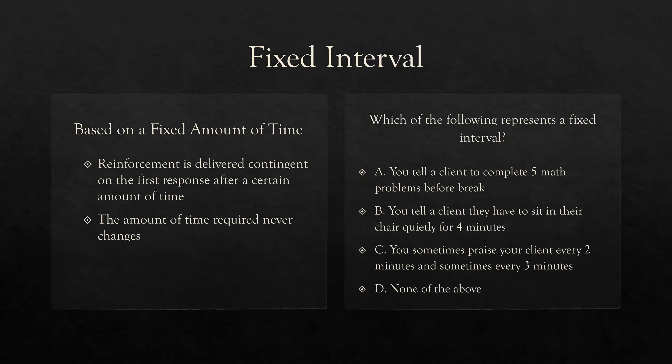Which of the following represents a fixed interval? A: tell a client to complete five math problems before break — yes it's fixed, but it's based on responses, not time, so eliminate it. B: tell a client they have to sit in their chair quietly for four minutes — based on time, and it's fixed at four minutes, so we reinforce them after four minutes pass. C: you sometimes praise your client every two minutes and sometimes every three minutes — this is obviously variable, an average. The only one with a fixed amount of time is B.